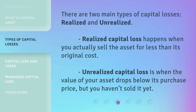There are two main types of capital losses: realized and unrealized. Realized capital loss happens when you actually sell the asset for less than its original cost. Unrealized capital loss is when the value of your asset drops below its purchase price, but you haven't sold it yet.